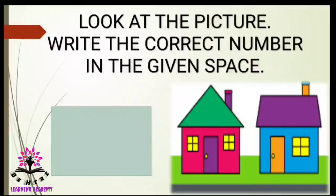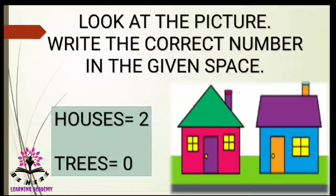Look at the picture and write the correct number in the given space. What picture do you find in this image? Yes, it is houses. How many houses are there? There are two houses. How many trees are there? There are no trees in the image. That means the number of trees is equal to zero.